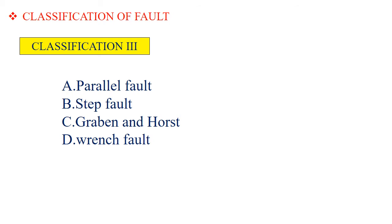In classification 3 we have four types of faults. The first one is parallel fault. Second is step fault. Third is graben and host fault. And the fourth one is wrench fault. We will see them one by one.